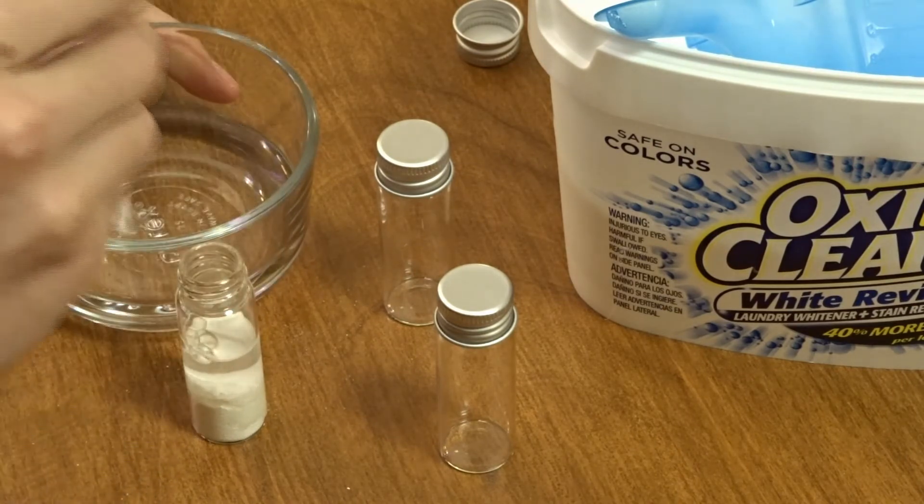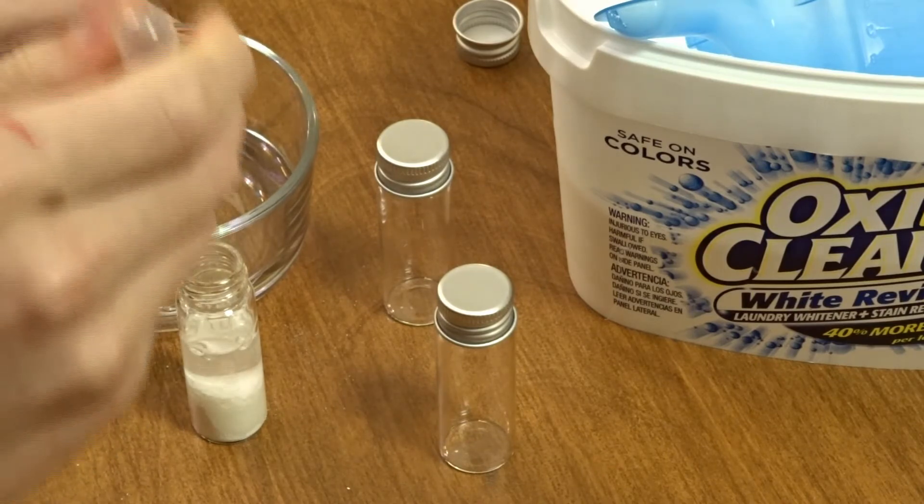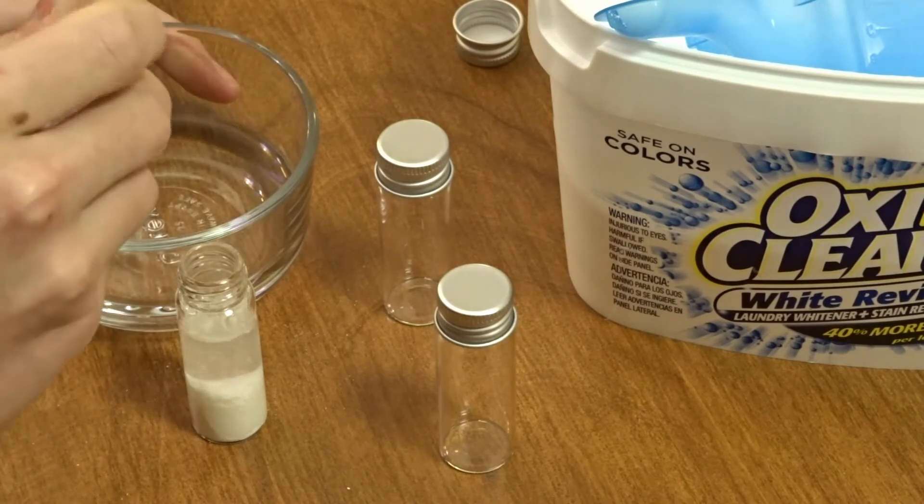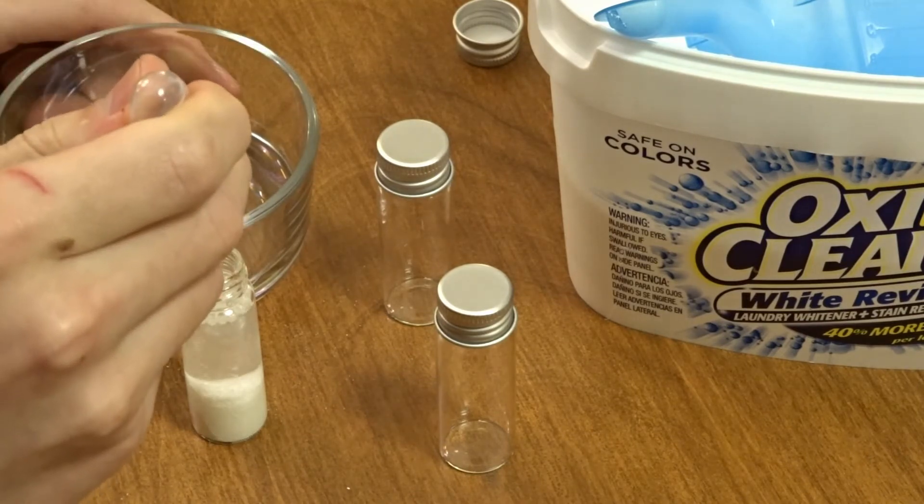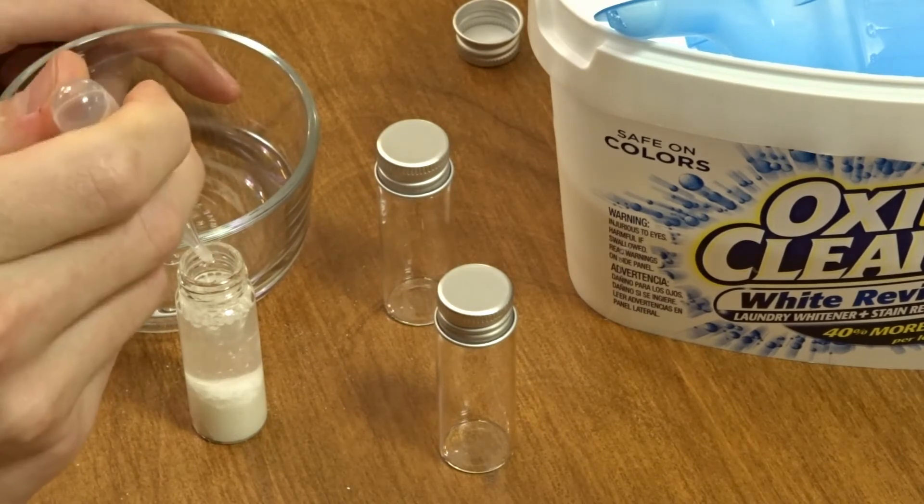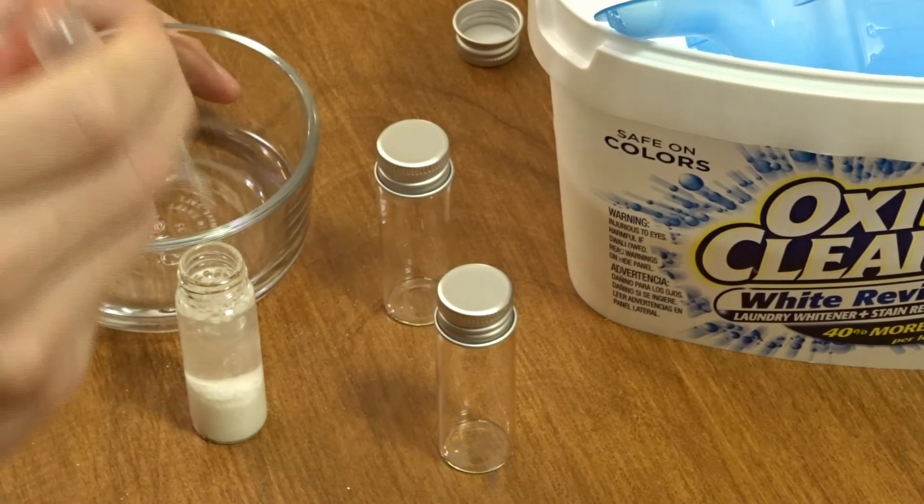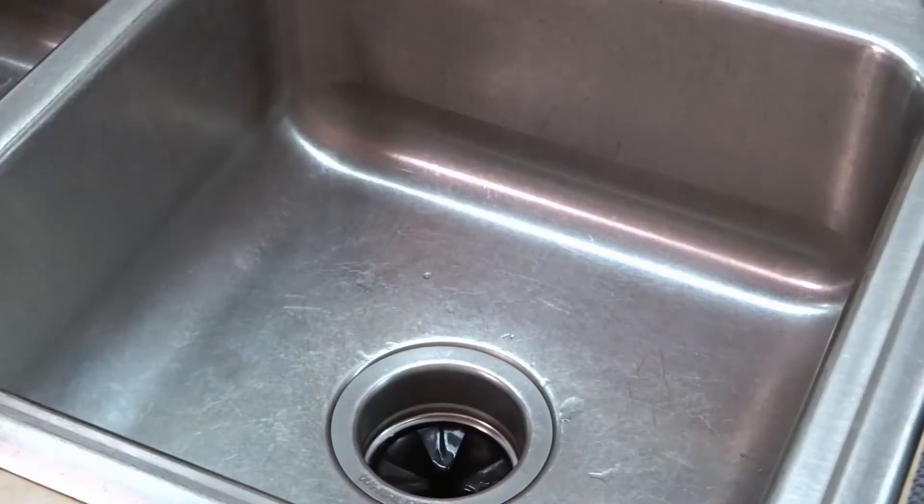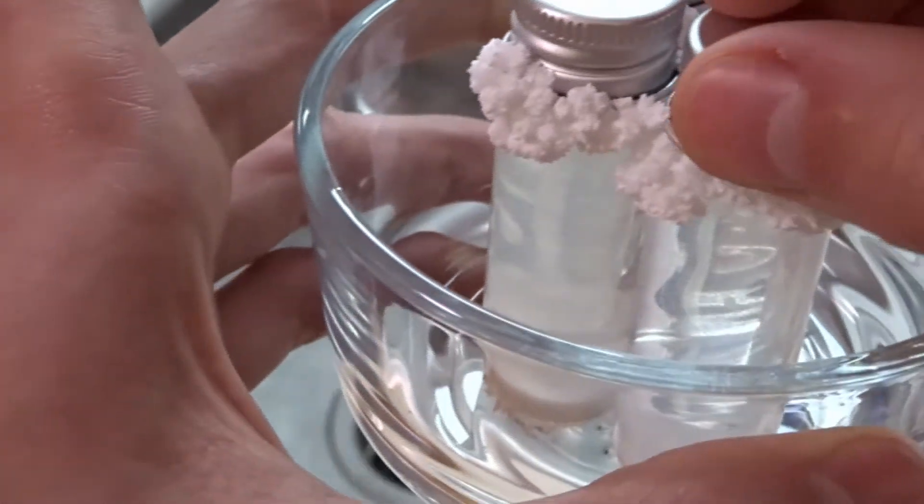So add the OxyClean and fill the rest of the way up with distilled water. Cap loosely and shake. The reaction is exothermic and the container will get quite warm. Once everything is dissolved, let it sit for at least 12 hours uncapped. In this time, the hydrogen peroxide will degrade into oxygen gas and water. This oxygen gas is the reason why you want to make sure the cap is off the container. You don't want a bomb on your hands. You could also just buy pure sodium percarbonate online and use that instead.